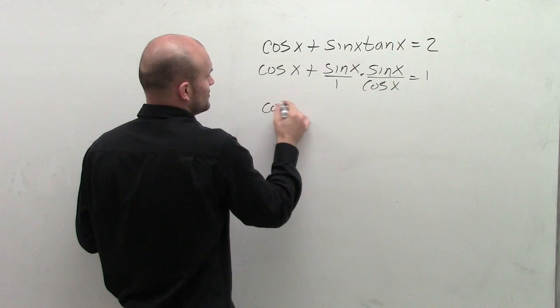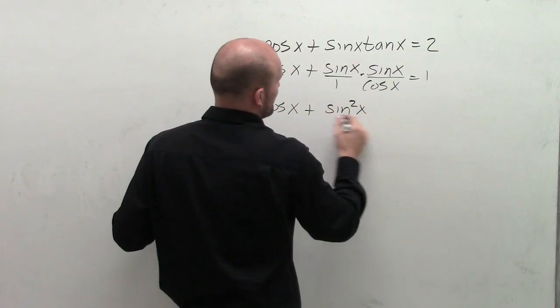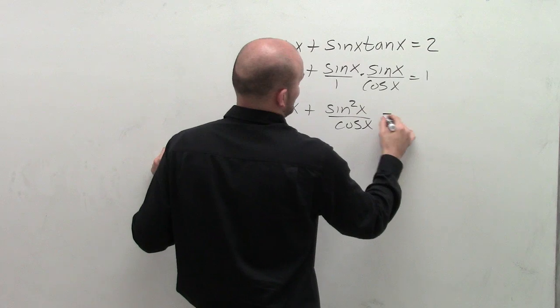Now, I can multiply those out, so I can get cosine of x plus sine squared of x over cosine of x equals 1.